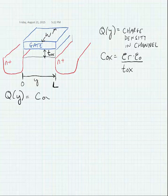And this is going to be equal to the oxide capacitance per unit area times the gate-to-source voltage minus the threshold voltage minus the potential in the channel immediately below the gate at any position Y.